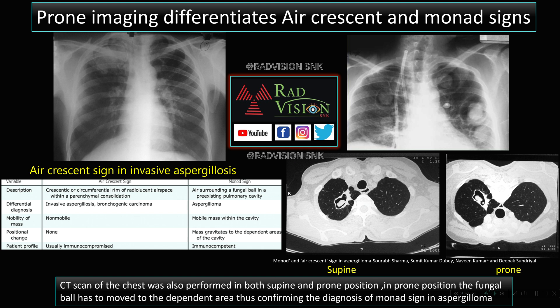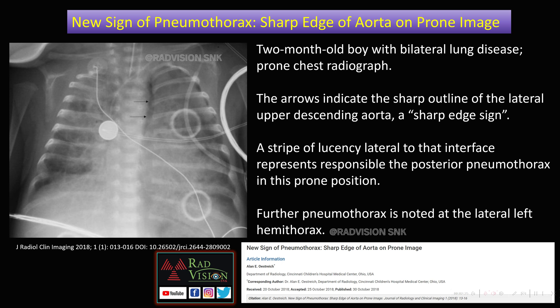Prone imaging also helps differentiate air crescent sign from Monod sign. This is air crescent sign and this is Monod sign. Here there is a pre-existing cavity with a fungal ball — in supine there is free movement of the ball, and this is confirmed in prone. A mobile mass within a cavity suggests Monod sign, seen in immunocompetent patients — typically aspergilloma in a pre-existing pulmonary cavity. If the mass is not mobile in either position, it is most likely air crescent sign, seen in immunocompromised patients with invasive aspergillosis or bronchogenic carcinoma.